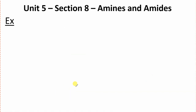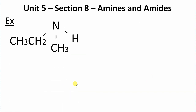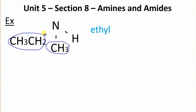The next one we've got here has a couple of different groups. Here, we have a methyl group, and here we have an ethyl group. So, ethyl should come first alphabetically: ethyl, methyl, amine.